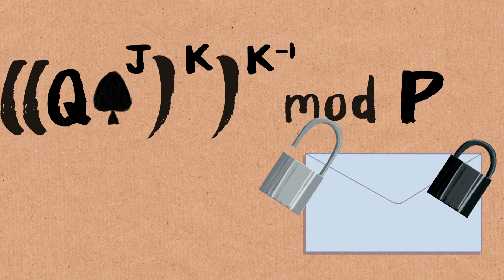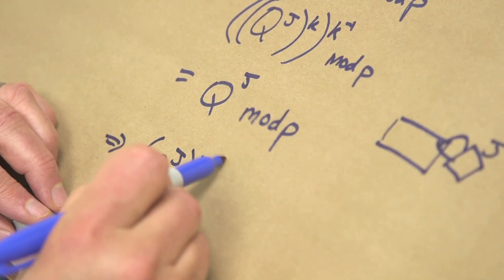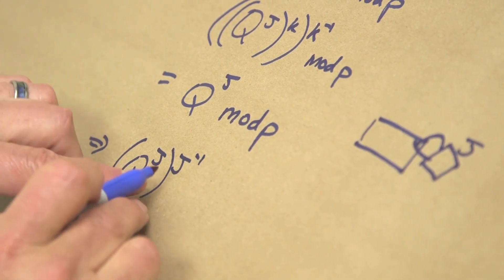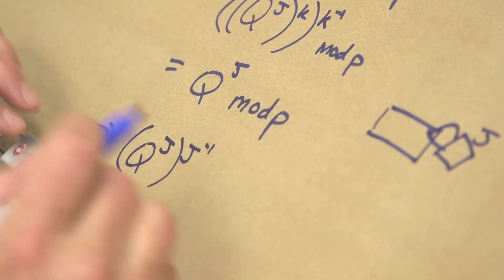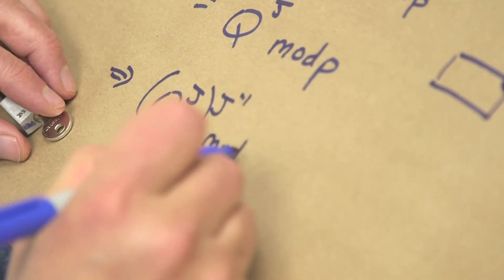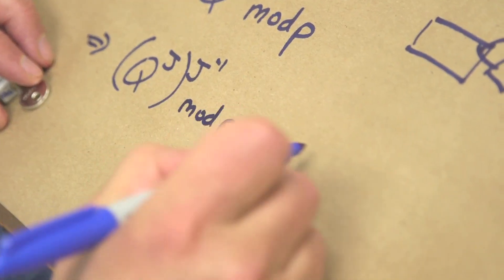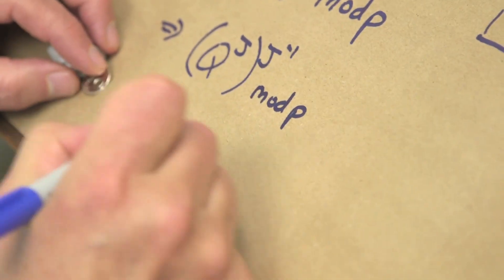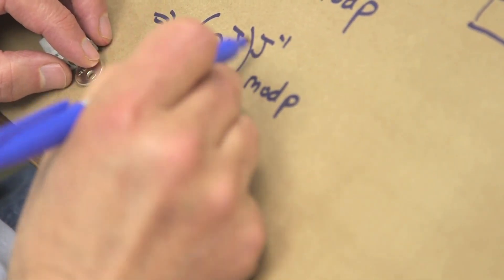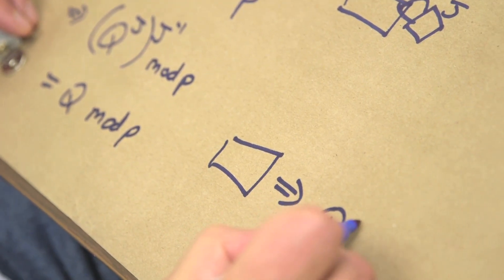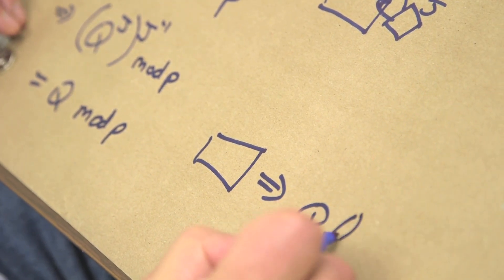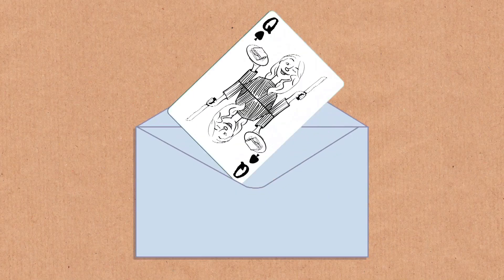The j lock remains. Now you can do the same thing — to remove your lock, take q to the j, to the j inverse, mod p. j times j inverse is 1, so this is just equal to q — you can get your card, queen of spades.